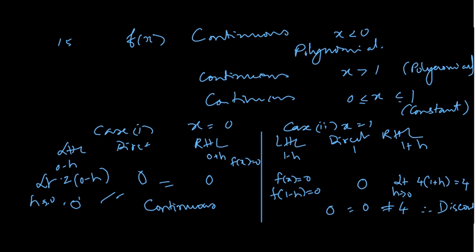So now we will go to the 17th question. After 17th, I will go to 26, 27, 28, 29, 13. Then I come back to the 18th question. So 17th question: find the relationship between A and B.